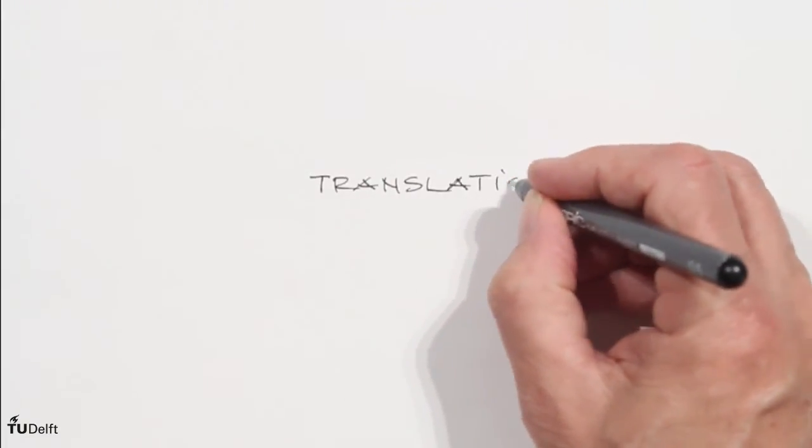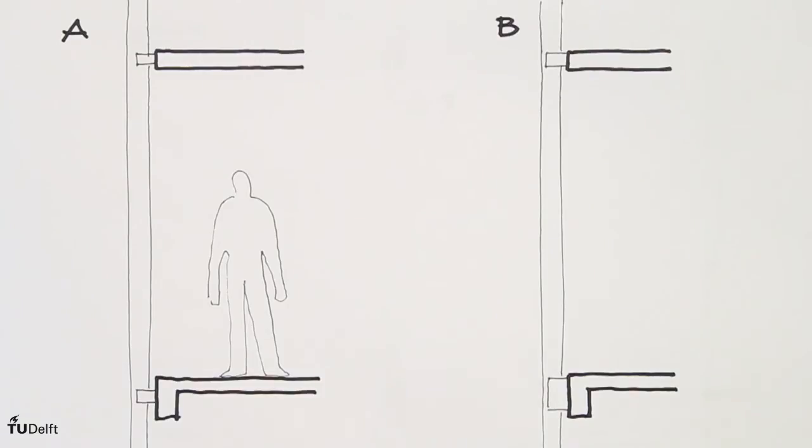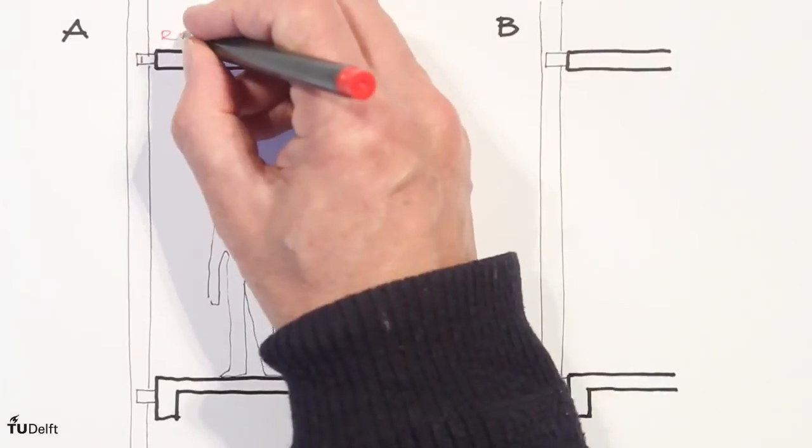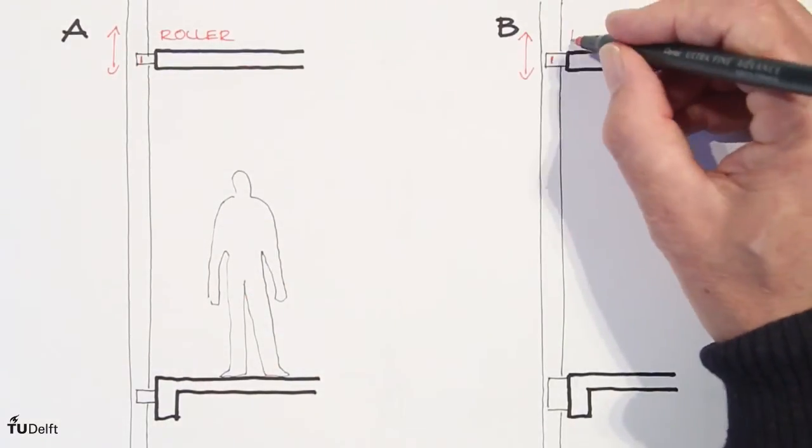We only discuss translation, but rotation is also an important issue. The example shows a large wooden post for facade construction. In the bottom anchor, two different solutions are shown.